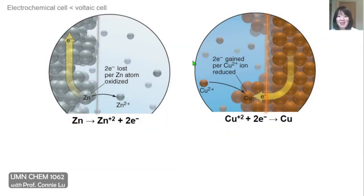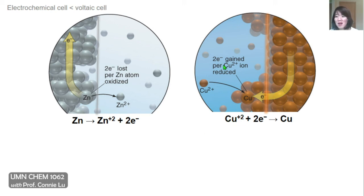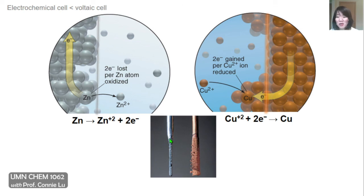These cartoons zoom in on the redox reaction occurring at the surfaces of the metal electrodes. At the anode, zinc is being lost to form zinc plus two ions, which dissolve in solution. So as the redox reaction takes place, the zinc electrode would look more eroded. On the other side, at the cathode, copper plus two ions from solution are reduced to form copper metal atoms that build up on the original copper electrode. Physically, if we let this redox reaction run for a long time, we can actually see the depletion of the zinc electrode and the growth of the copper electrode.